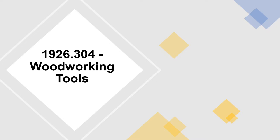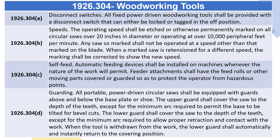1926.304 Woodworking Tools. 1926.304(a) Disconnect Switches: All fixed power driven woodworking tools shall be provided with a disconnect switch that can either be locked or tagged in the off position. 1926.304(b) Speeds: The operating speed shall be etched or otherwise permanently marked on all circular saws over 20 inches in diameter or operating at over 10,000 peripheral feet per minute. Any such saw shall not be operated at a speed other than that marked on the blade. When a marked saw is reground for a different speed, the marking shall be corrected to show the new speed.